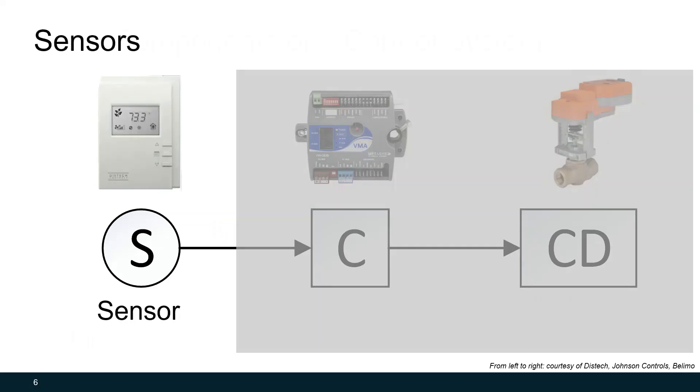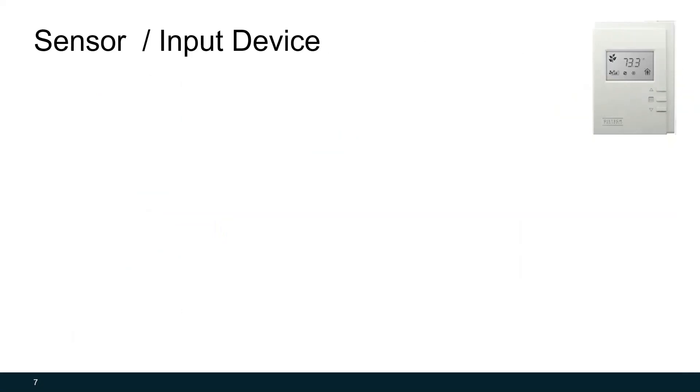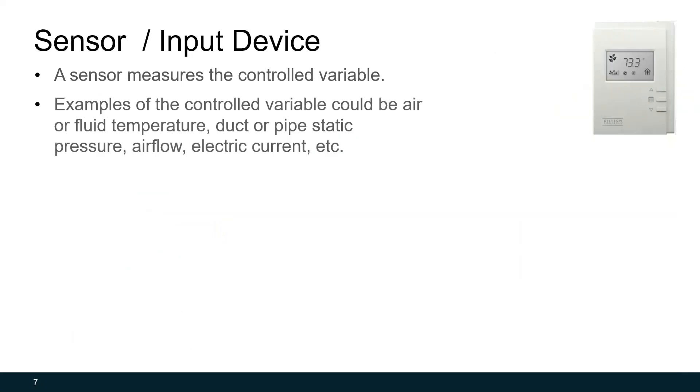So let's start with sensors or the input device. The sensor is simply a device that measures a controlled variable. What's the controlled variable? Well, for the thermostat that's shown in the top right of the screen, that's space temperature. It's simply whatever we're trying to measure and usually control in the building. It could be air temperature, it could be water or fluid temperature, duct or pipe static pressure, airflow through a duct, or electric current that's going to a piece of equipment.